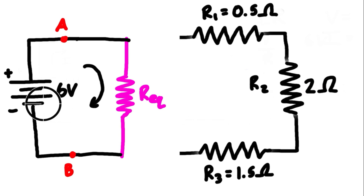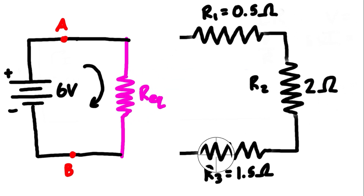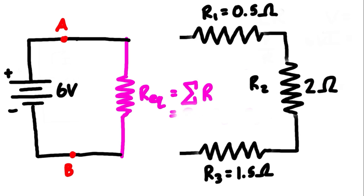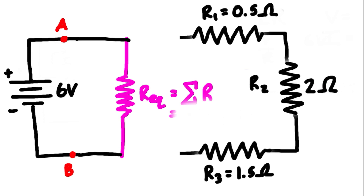For simple series resistors connected head to tail, the equivalent resistance is just the sum of all individual resistances: R_eq = R1 + R2 + R3. Filling in our values: 0.5 ohms plus 2 ohms plus 1.5 ohms gives us an equivalent resistance of 4 ohms.